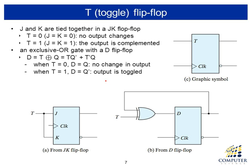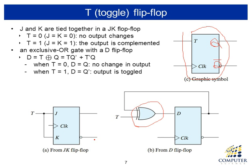Another type of flip-flop used in this class is the T flip-flop, or toggle flip-flop. Its symbol has one input T, a clock, and output Q with its complement available. The T flip-flop is configured by having an exclusive-OR at the D flip-flop input, with one input being the feedback from output Q and the other being input T. Alternatively, a T flip-flop can be made from a JK flip-flop by tying both J and K inputs together.